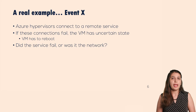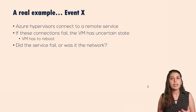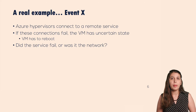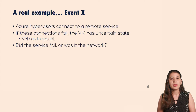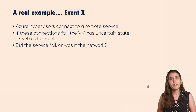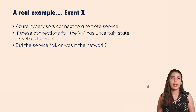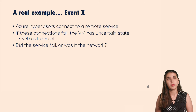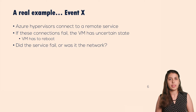A real example of this is what we call Event X in Azure. We have hypervisors in Azure connect to a remote service, and whenever that connection to that service fails, the VM has an uncertain state and therefore it panics and reboots. When this happens, we always have the question: whose fault was it? Was it the network, or was it the service that failed?